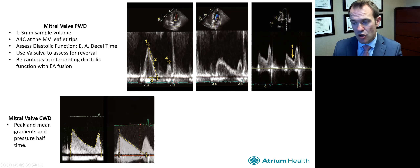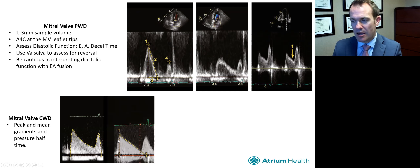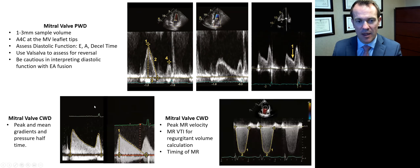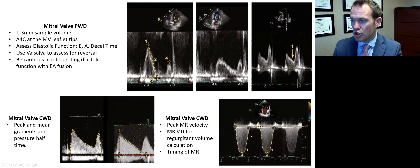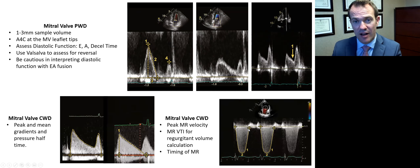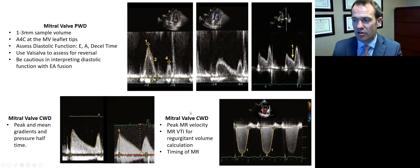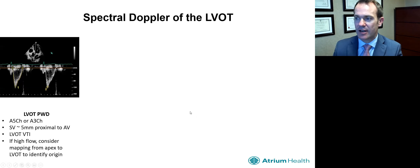If there's any evidence of stenosis, we use continuous wave to measure peak and mean velocity and measure the pressure half-time. If there is mitral regurgitation, we use continuous wave Doppler to measure the peak velocity and the mitral valve VTI, which goes into our calculations for mitral regurgitation volumes and fractions.